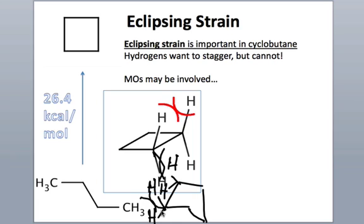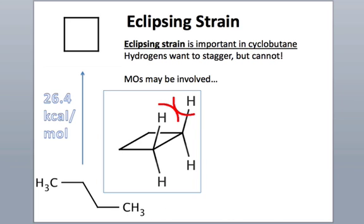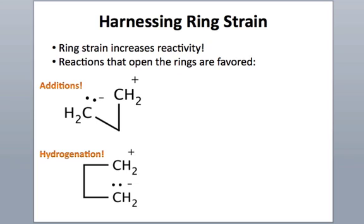But it is substantial, and we can potentially harness that, for instance, for ring-opening reactions of cyclopentane. All right, so that's what I'm going to talk about now, how we can harness ring strain to our advantage.